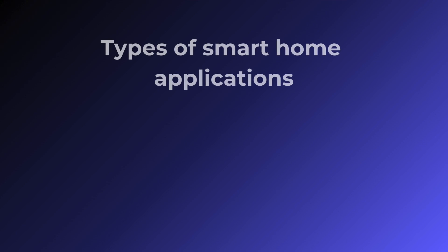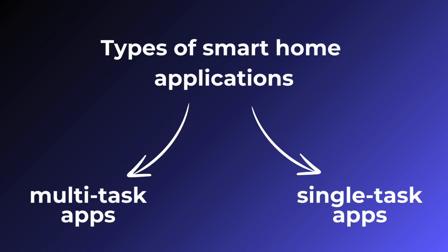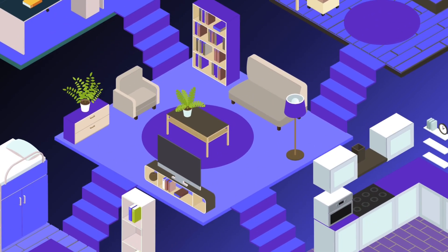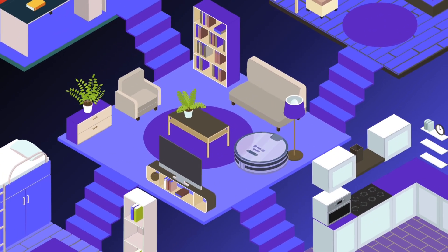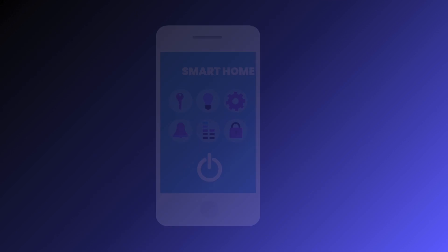There are two types of smart home applications: single task and multi task apps. A single task app controls one device or a homogenous group of devices, like a robot vacuum cleaner. A multi task app controls multiple devices, creating a single ecosystem for lighting, temperature, doors, cameras, and more.